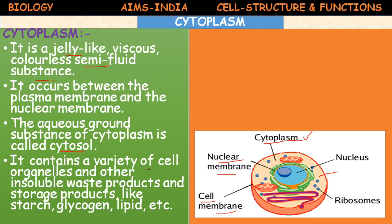The cytoplasm contains a variety of cell organelles and other insoluble waste products and storage products like starch, glycogen, and lipids. Different chemical substances or macromolecules are present in the cytoplasm. Even hormones are present dissolved in the cytoplasm.